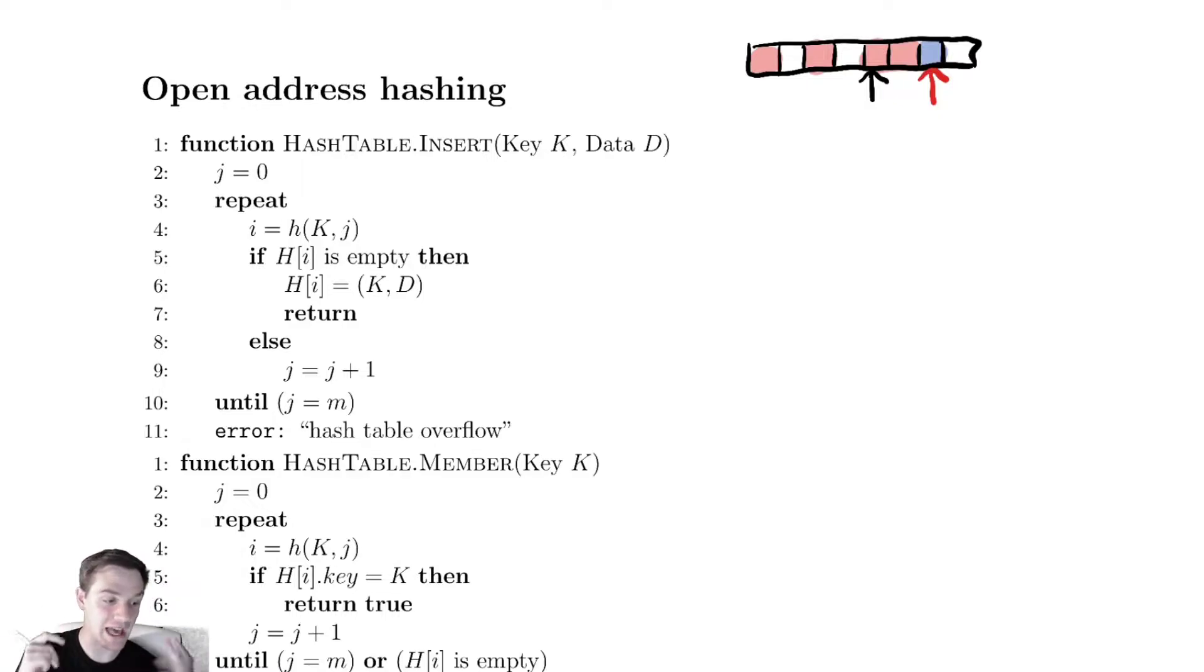If it's not empty, we're going to rehash it by incrementing this variable and trying again and again until we run out of locations in the table. If we run out of locations, we throw a hash table overflow error. Let's discuss what this hash function might look like.